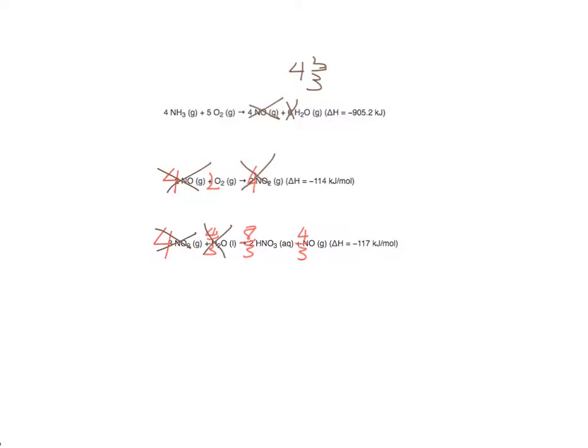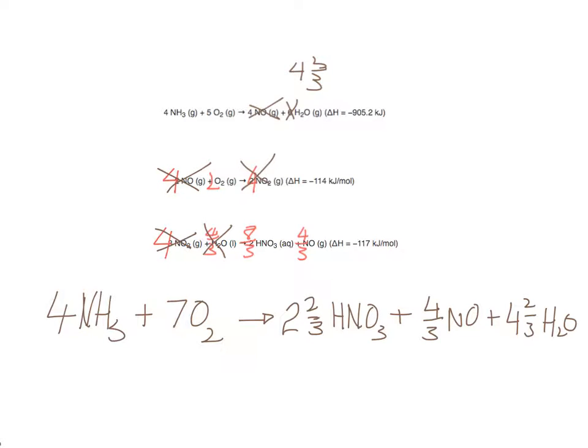Once all that cancelling is done, we can just add up all the reactants and add up all the products. And you end up with an equation like this, but because we like whole numbers in it, let's multiply everything by three and see what the overall equation will be.